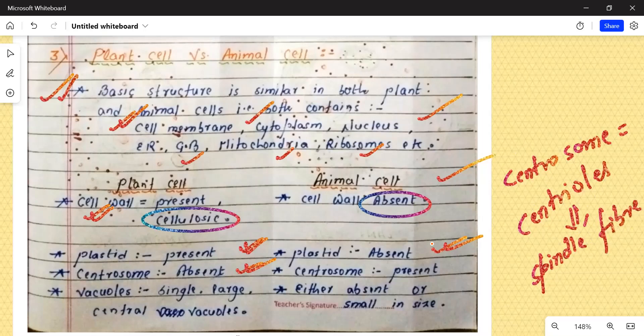So, yahan par in case of plant cells, centrosome remains absent. That means ki centrioles or spindle fiber, wahaan se centrosome se nahi banta hai. But in case of animal cell, centrosome remains present.